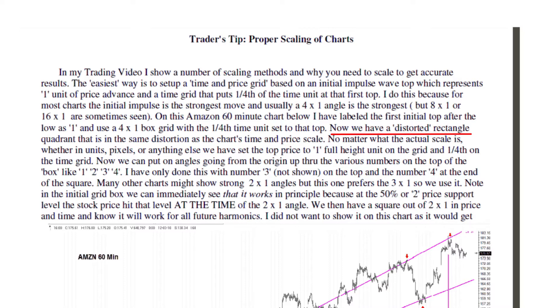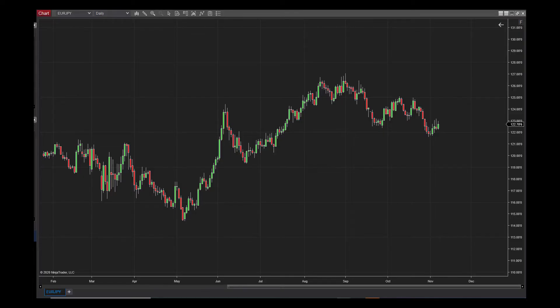Now we have a distorted rectangle quadrant that is in the same distortion as the chart's time and price scale. There you have it — the man's a genius. He's made this very easy no matter what your level of GAN mastery is. So now let's apply this idea to a chart.